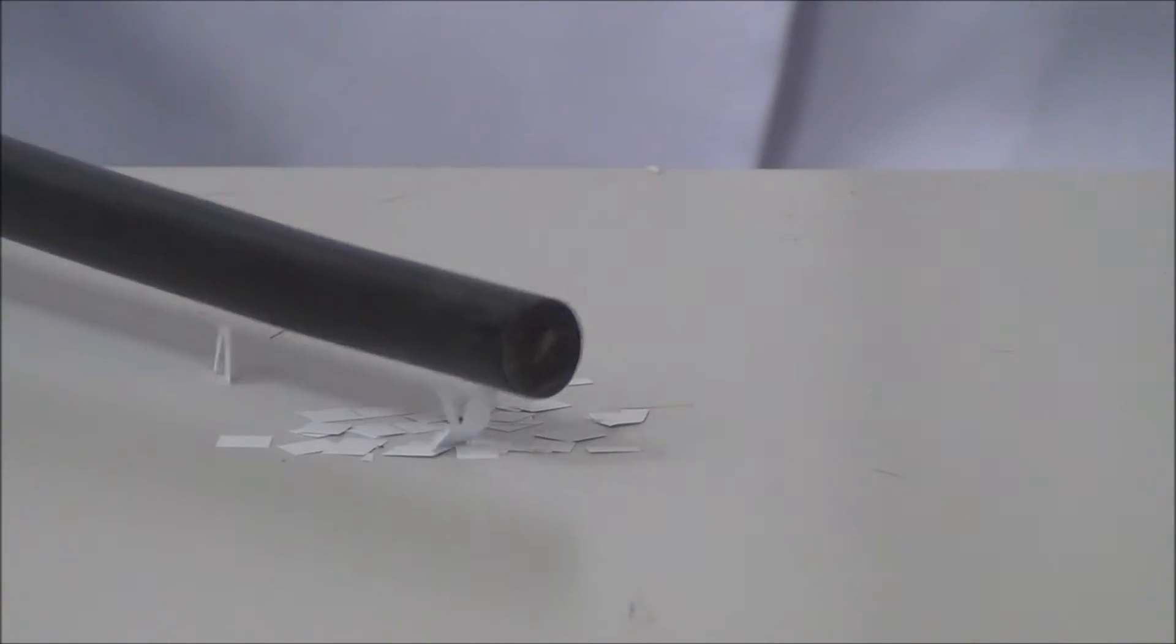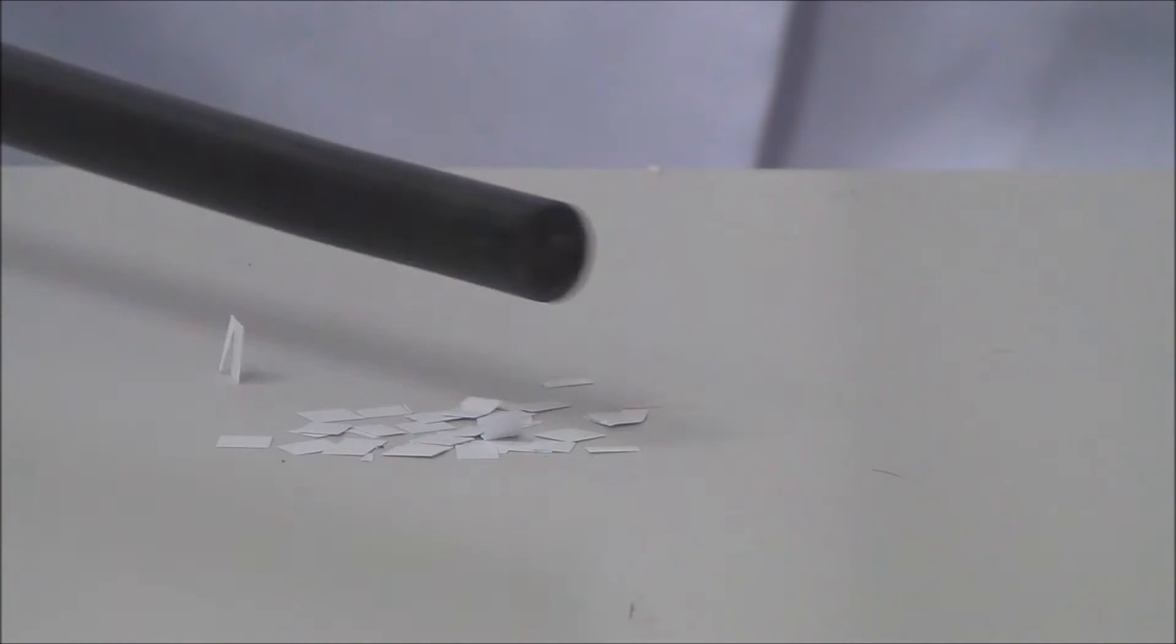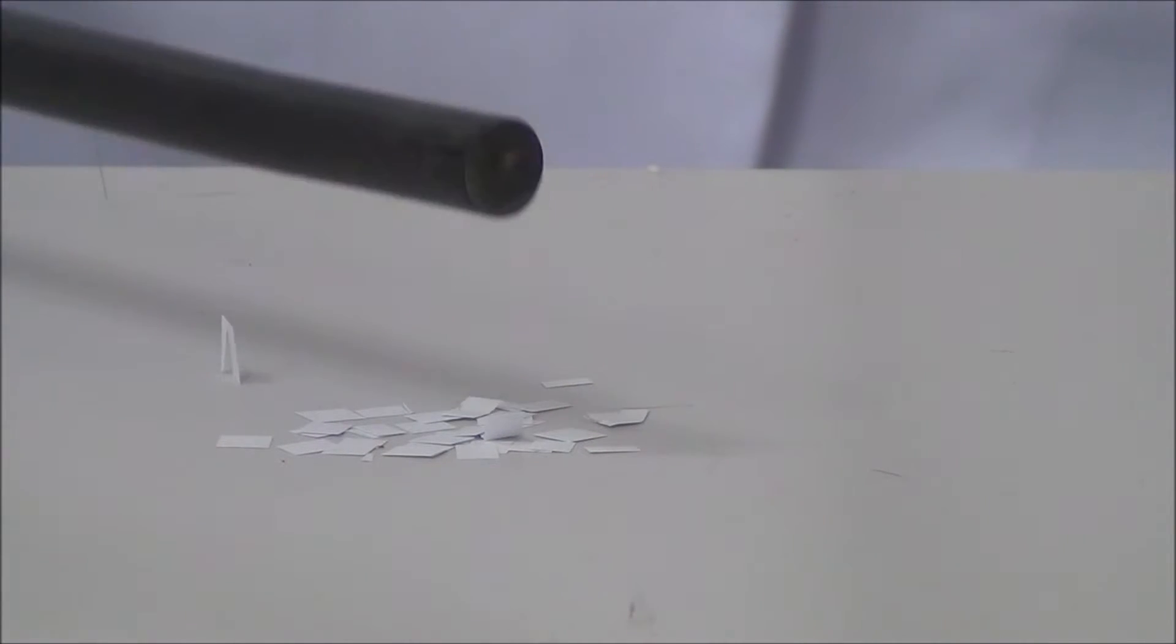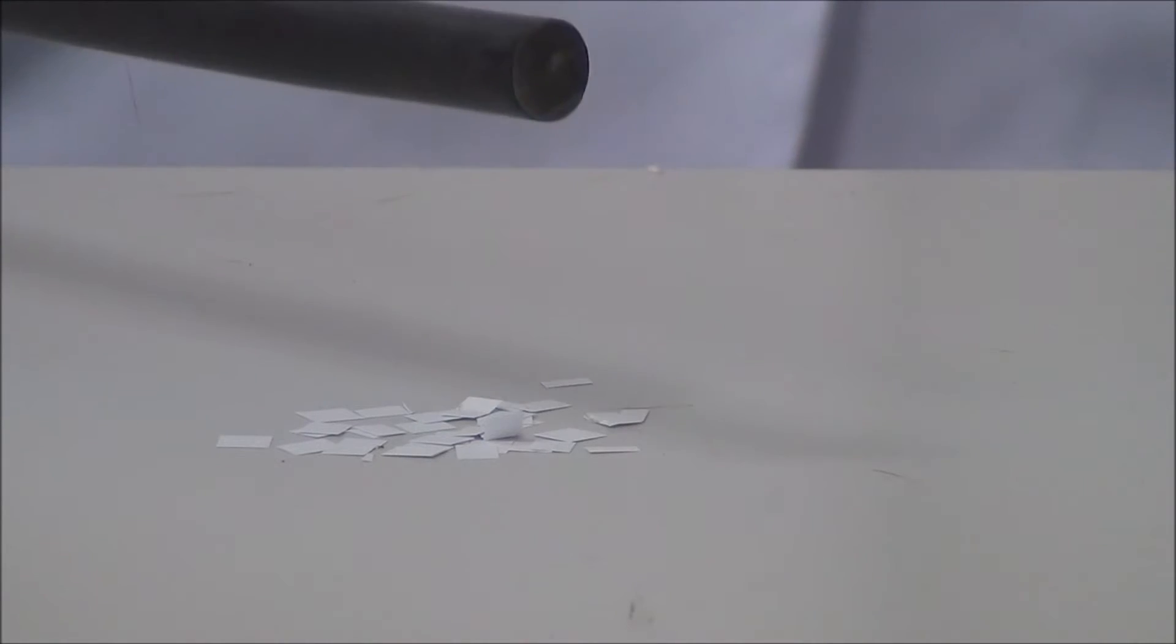So that polystyrene rod acts as a magnet to attract the paper. After we rub the polystyrene rod with wool, what will happen? It acts as a magnet to attract the paper.